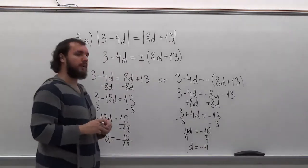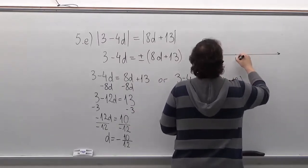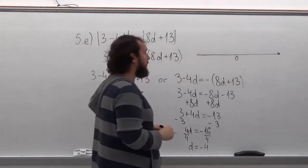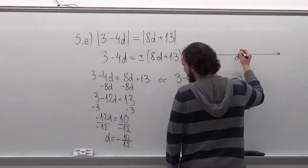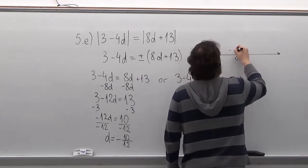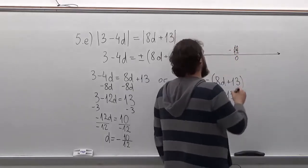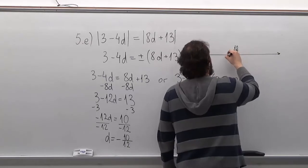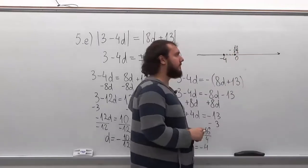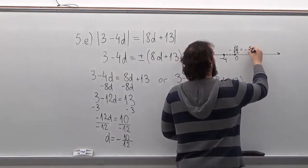Now we'll put both of those answers onto a number line. Our first answer, minus 10 over 12, is going to be between minus 1 and 0, so you can just put it right to the left of 0. And our second answer is minus 4 — so we'll count 3, 4, minus 4. And put a dot on every answer. Remember, you can reduce this answer further, and it will be minus 5 over 6.